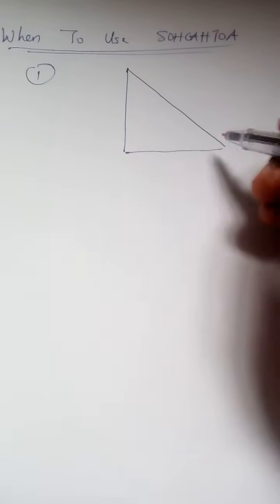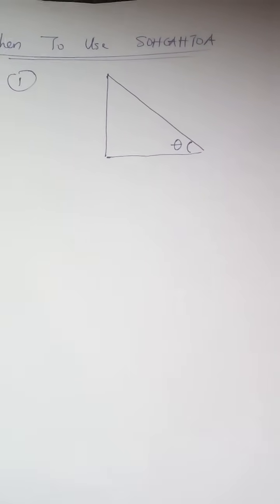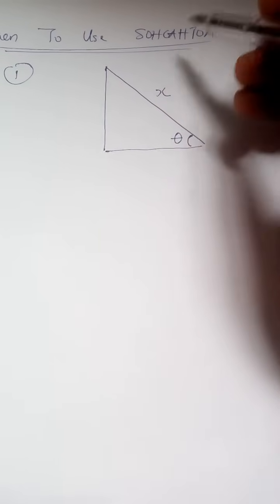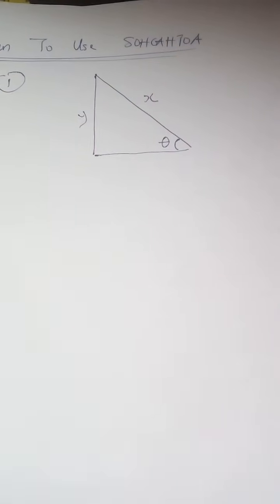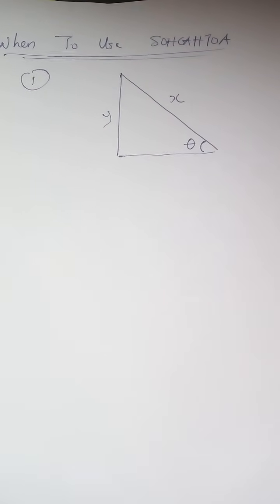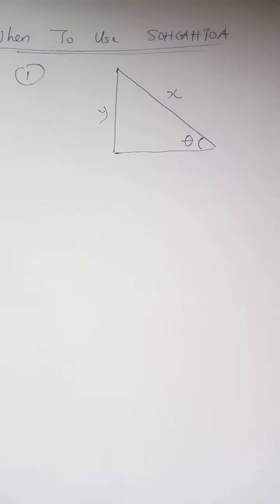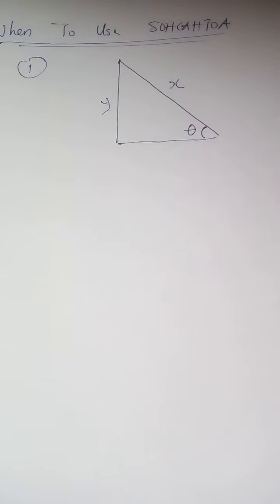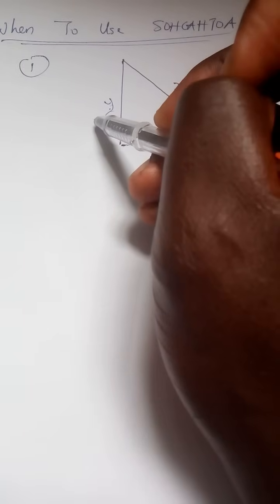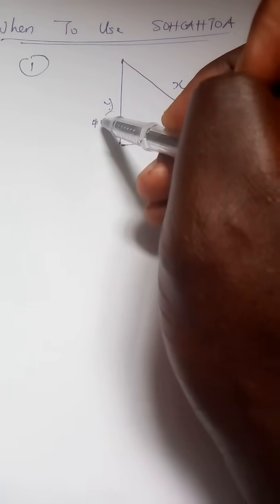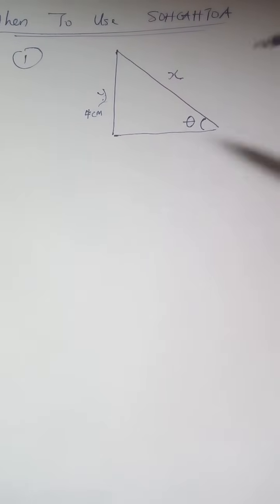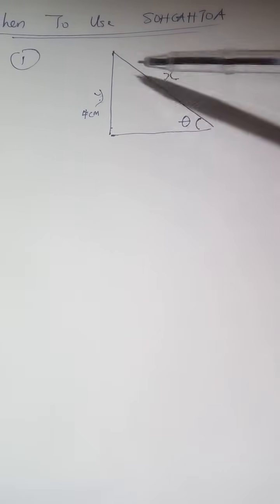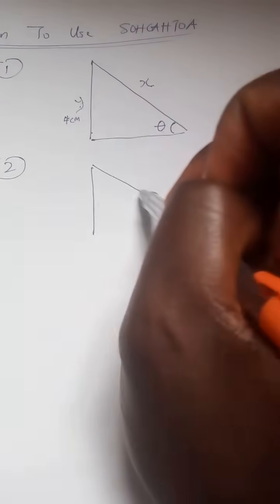You use SOHCAHTOA when you have an angle and two sides. You have an angle and you've been given two sides — let's call them X and Y. They might give you Y as, say, 4 cm and tell you to find X. They give you an angle, one side, and tell you to find the other side — use SOHCAHTOA.